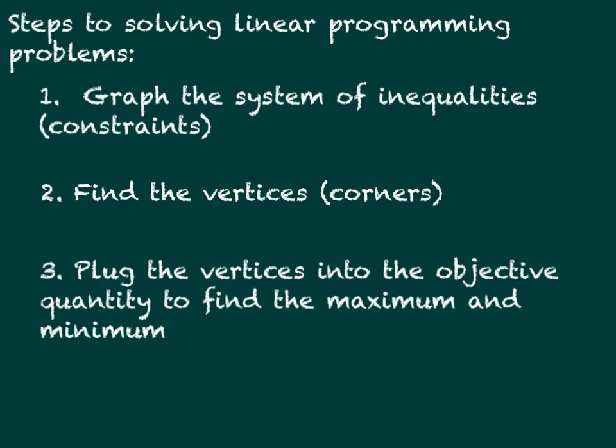Your steps to solving linear programming problems are three. First, graph the system of inequalities — those are your constraints. You shade an area and your answer must fall within that overlapping shaded area. Then find the vertices of that shaded area, the corners — the intersections of the lines. Finally, plug those vertices, your x and y values, into your objective quantity and solve for the maximum and minimum values.